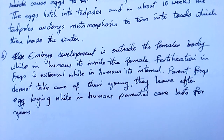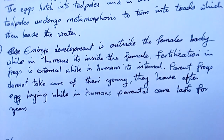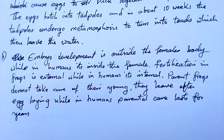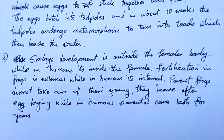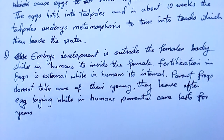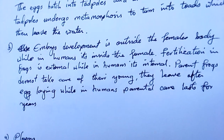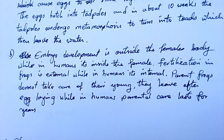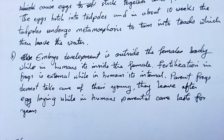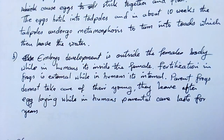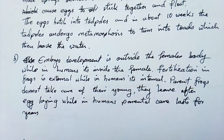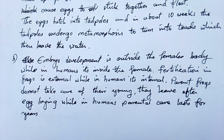Embryo development in frogs is outside the female body, while in humans it's inside the female's body. Fertilization in frogs is external, while in humans it's internal, because there's penetrative sex in humans. In frogs there's no penetration.